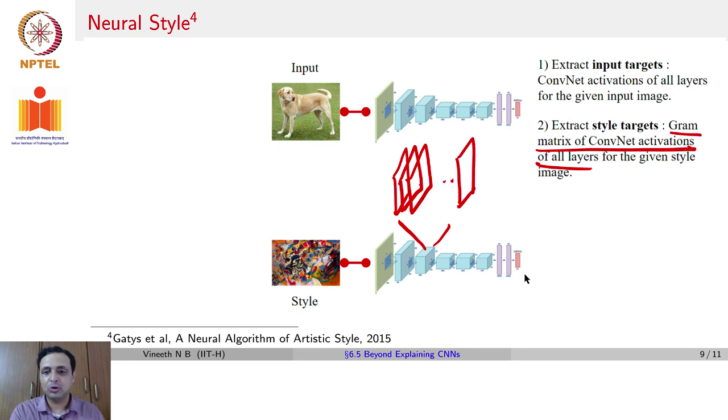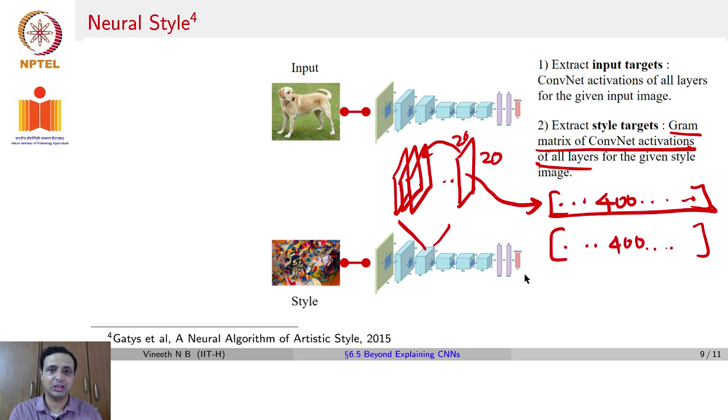Now, each feature map could be say 20 by 20 dimensions as an example. What we do here is to linearize or rasterize this entire feature map into a 400 dimensional vector. And now, you take the covariance of this 400 dimensional vector with another channel or another feature map in that volume.